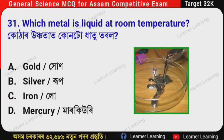Next question: Which metal is liquid at room temperature? (Assamese: Kothar uusna taat konto dhatu torol?) The correct option is Option D — Mercury. Mercury is the liquid metal at room temperature.